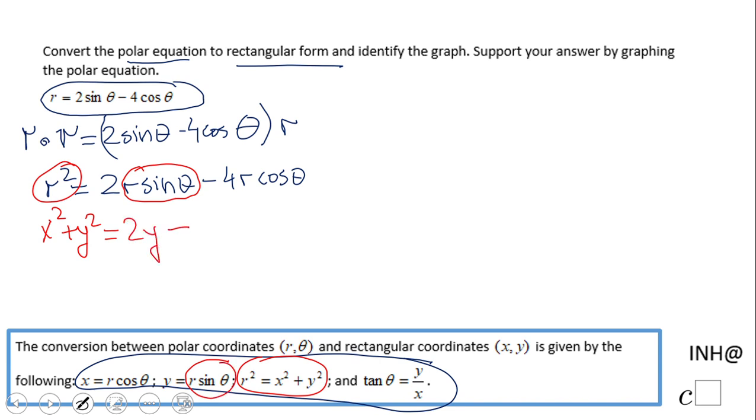Minus, and then I notice r cosine theta, which is x, minus 4x. So this is a rectangular form. I'm going to get a standard form where I'm going to just subtract 2y from both sides and add 4x on both sides so I can get zero on the right side. And this is the rectangular form of this guy.